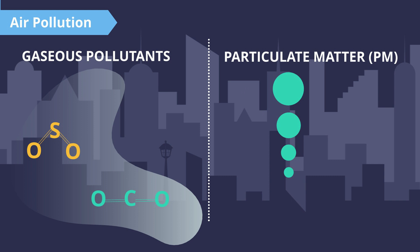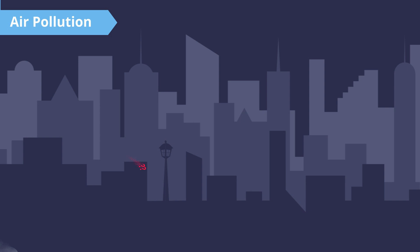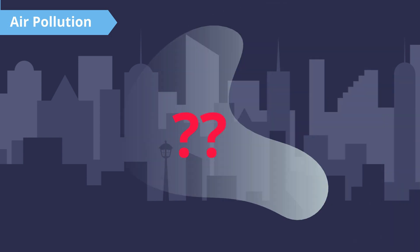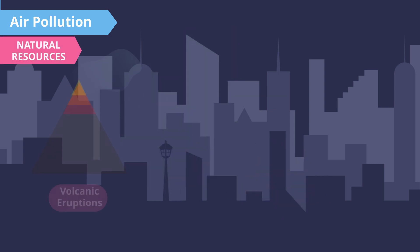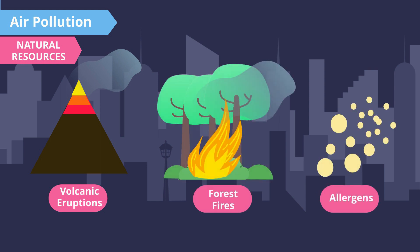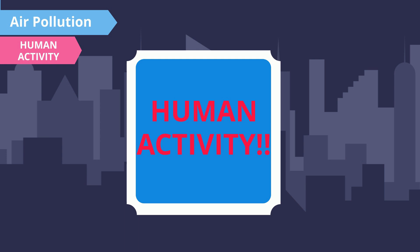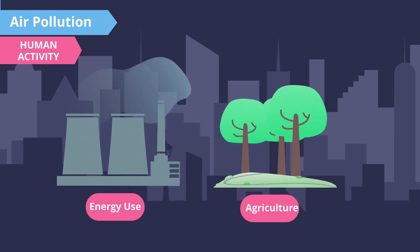Generally speaking, the smaller the PM, the more harmful it is to us and the environment. These pollutants don't just appear out of nowhere — they typically come from natural sources or man-made sources. Examples of natural sources include volcanic eruptions, forest fires, and allergens. However, the most abundant source of air pollutants is man-made sources, or human activity, such as energy use and agriculture.